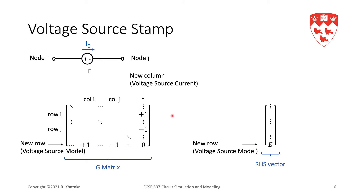One thing you may have noticed is that all of the stamps developed so far are symmetric — the MNA matrices have been symmetric. This is our voltage source stamp, and now let's take a look at the short circuit stamp.